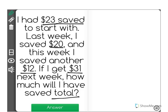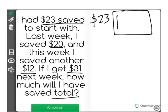Let's visualize this. It says I have $23 saved to start with, so I'm going to go ahead and draw a representation of $23. These bars will represent $10 each — there's $10, $20 — and the x's will represent $1: $21, $22, $23.